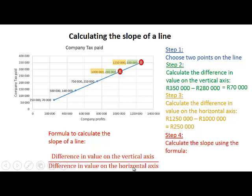Now we use the formula to calculate the slope. The difference in value on the vertical axis is 70,000, and the difference in value on the horizontal axis is 250,000. If we divide 70,000 by 250,000, that gives us 0.28. So the slope of this line between A and B is 0.28.